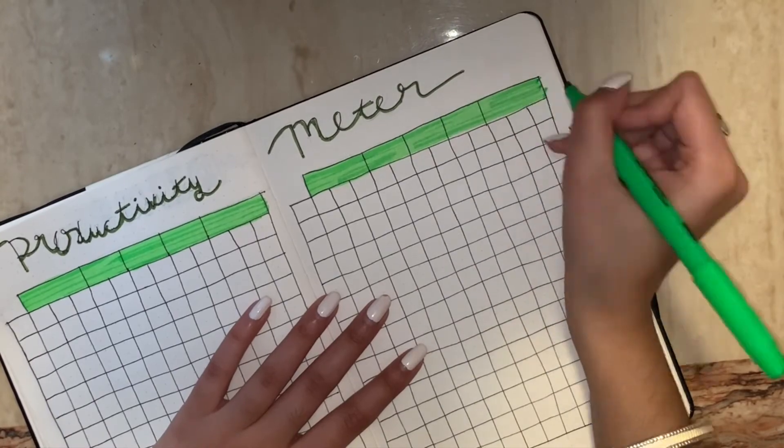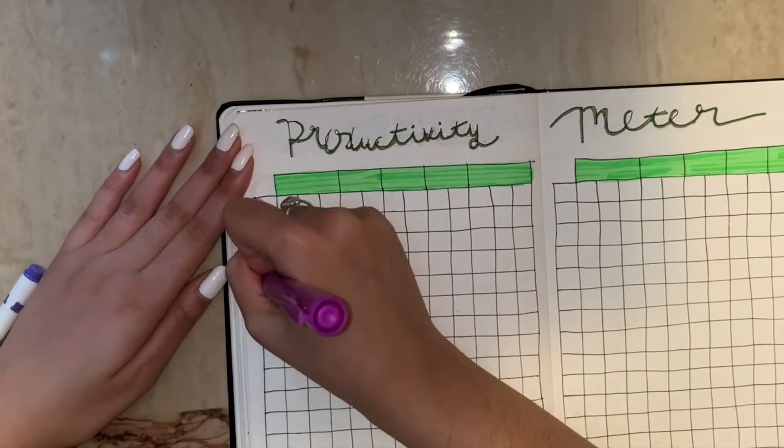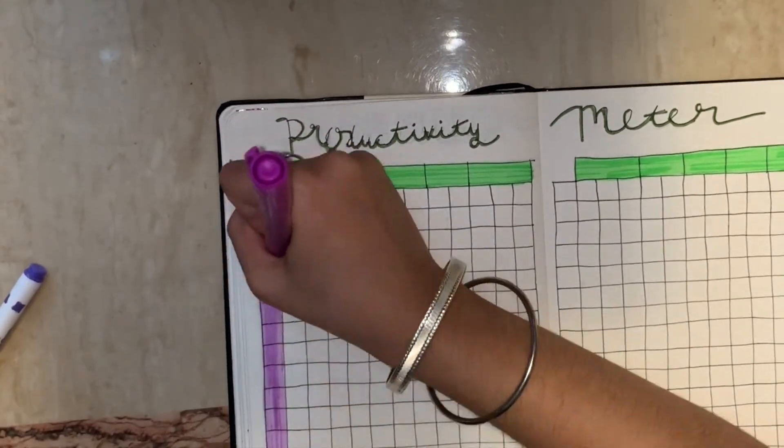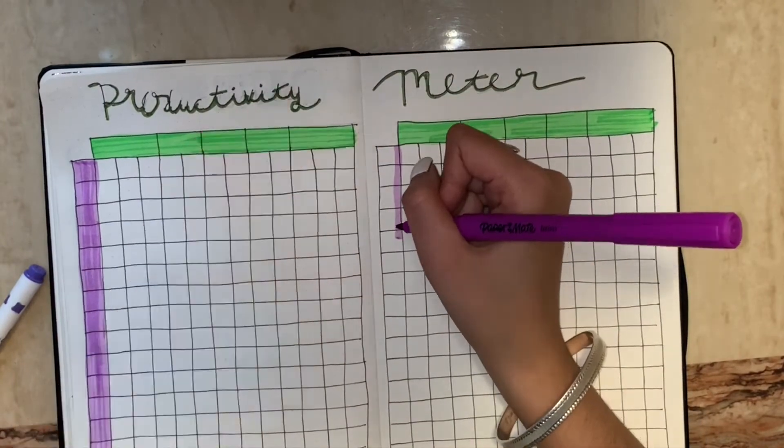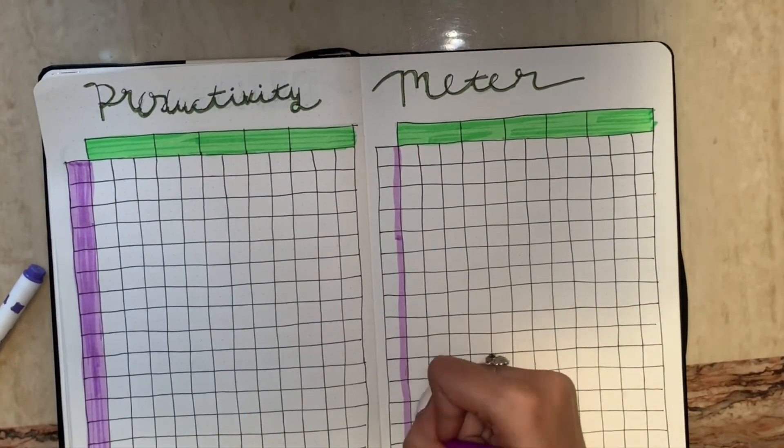And then I'm going in with purple for the vertical row at the very left, which is going to be for the days of the month, each number, so 1 to 31.